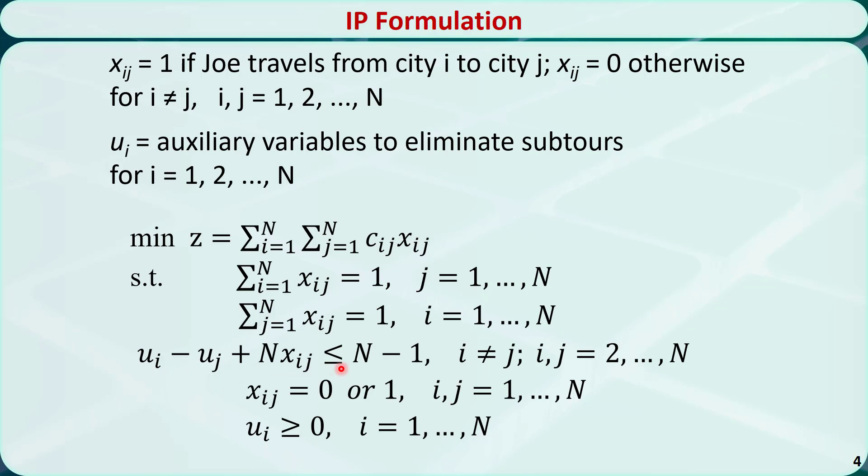The last constraint ensures that there is no subtour. An example of a subtour in a 5-city traveling salesman problem is that we start from city 1, we go to city 2 and city 3, then we come back to city 1 without covering cities 4 or 5 at all.